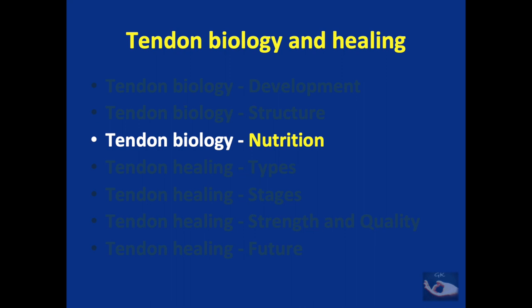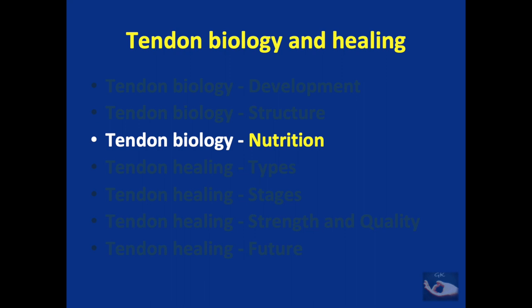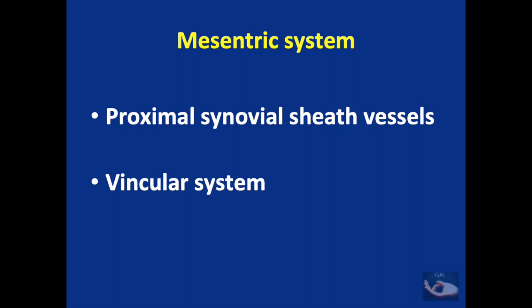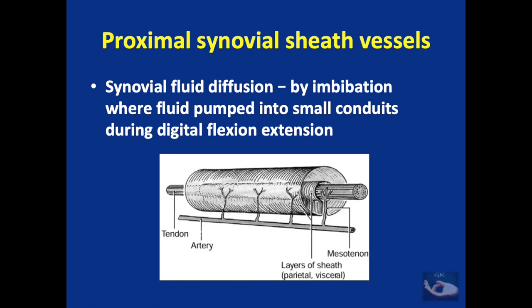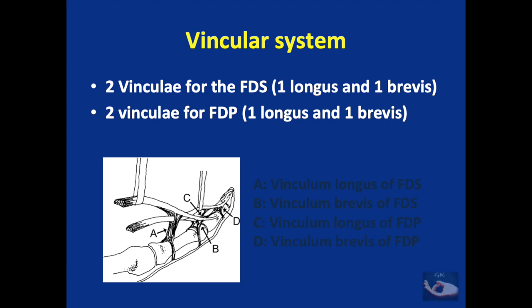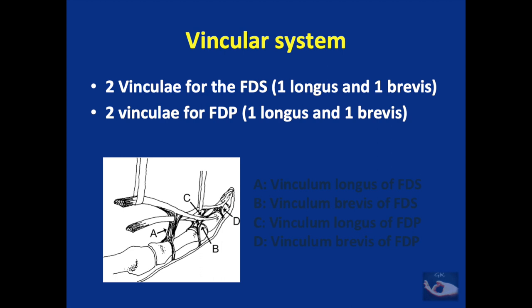Understanding the nutrition of the tendon is very important. There are three sources of nutrition: the osteotendinous junction, the musculotendinous junction, and the mesenteric system. The mesenteric system consists of the proximal synovial sheath vessels and the vincular system. Synovial fluid provides nutrition by imbibition, where fluid is pumped into small conduits during digital flexion and extension. The vincular system is a very important source of nutrition, consisting of two vinculae for the flexor digitorum superficialis — one longus and one brevis — and two vinculae for the flexor digitorum profundus — again one longus and one brevis.